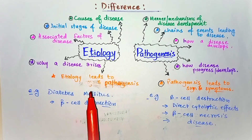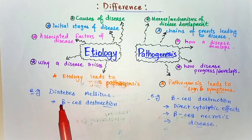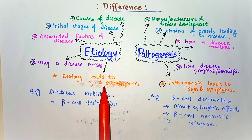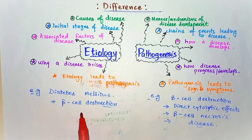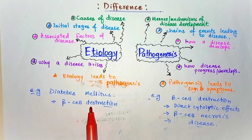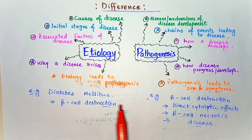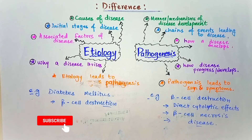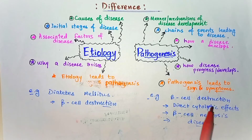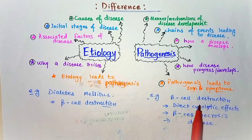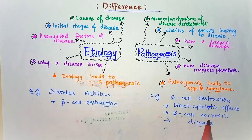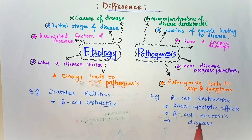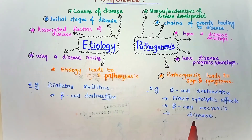An example that illustrates the difference between etiology and pathogenesis is diabetes mellitus. In etiology, we discuss the cause of diabetes mellitus, which is beta cell destruction leading to insulin deficiency. In pathogenesis, we discuss how diabetes mellitus develops: beta cell destruction or necrosis causes direct cytolytic effects, resulting in beta cell necrosis, then insulin deficiency, which leads to the disease of diabetes mellitus.